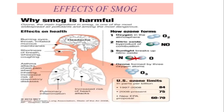How is ozone formed? Oxygen is present in the atmosphere, and when nitric oxide, a byproduct of combustion, acts on sunlight, ozone is formed. Ozone is formed by three oxygen molecules (O3).